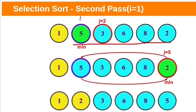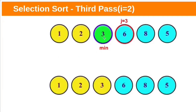Now this is the unsorted subarray. Assume this first element as the minimum. Start at the next element to find the smallest. If we repeat the same process, we find the smallest element at index 5, which is 2. Swap this first element in the unsorted subarray with the smallest element 2. After the second pass, this is the sorted sublist and this is the unsorted sublist. Assume the first element in the unsorted sublist at index 2 as the minimum. All other elements are bigger than 3, so 3 is the smallest. Since minimum element 3 is also the leftmost element in the unsorted sublist, 3 stays at the same position. After the third pass, this is the sorted sublist and this is the unsorted sublist.